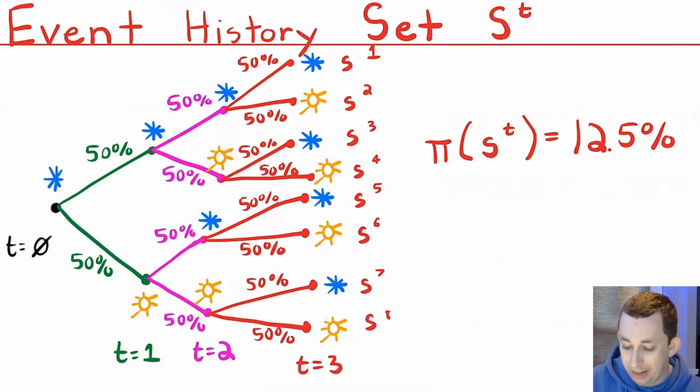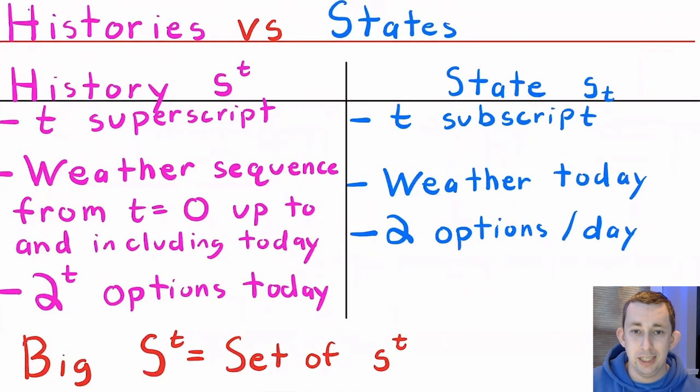So again, this is called the event history set, big S superscript T, and it contains all the little S superscript T's or all the event histories. All the event histories belong to the event history set. That's the difference between little S and big S superscript T. And again, if we just have this three period example, we have two possible weathers in each day. So the probability of all of these event histories or each of these event histories, little S superscript T, is just 12.5%.